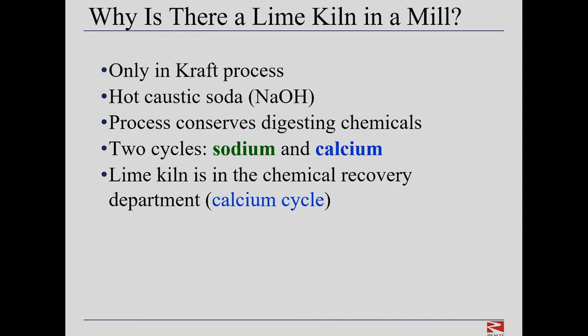Lime kilns are used only in the kraft paper process. Kraft means strong. The earliest lime kilns in the paper industry in the US date to 1930 at Panama City, Florida, and 1934 at West Point, Virginia. Today there are some 475 rotary kilns in use globally for the lime recovery process.